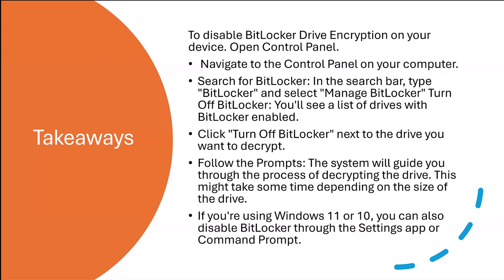To disable BitLocker Drive Encryption on your device, go to the Control Panel, type BitLocker in the search bar, select Manage BitLocker, then select Turn off BitLocker. You'll see a list of drives with BitLocker enabled — click Turn off BitLocker next to the drive you want to decrypt and follow the prompts. The system will guide you through decrypting the drive, which may take some time. If you're using Windows 11 or 10, you can also disable BitLocker through the Settings app or the command prompt.